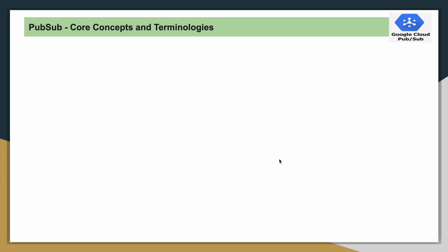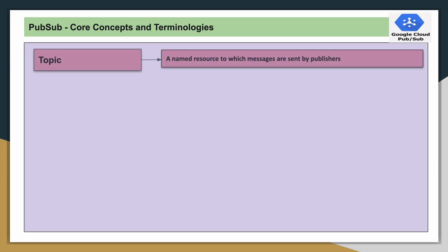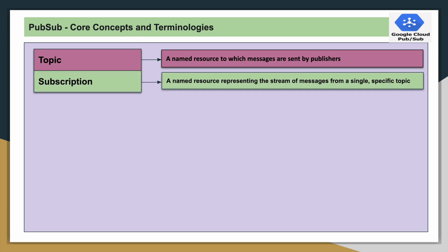Now we will see some core concepts related to PubSub. The first one is a topic — it's a named resource to which messages will be delivered by the publisher. A publisher can be an application or it can be an IoT device which would continuously publish messages to the topic.